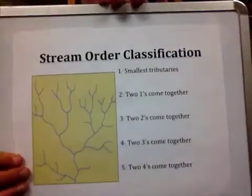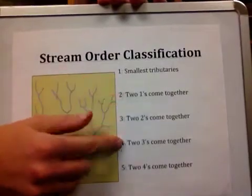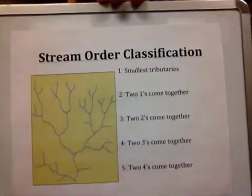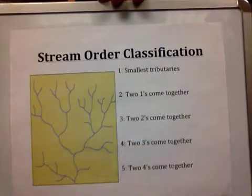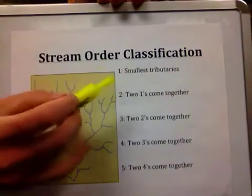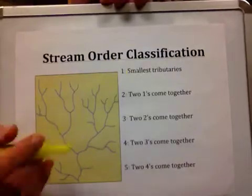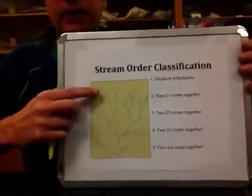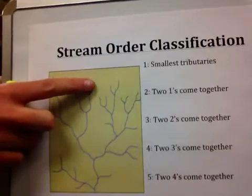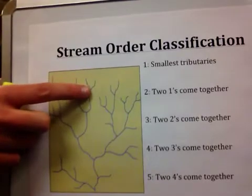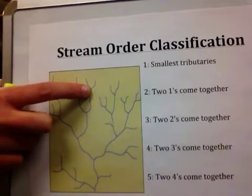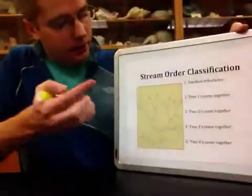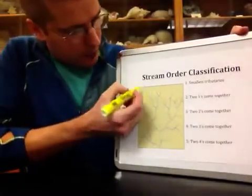We actually give numbers to streams — one, two, three, four, five — based on where they are in a drainage network. A number one stream is the smallest tributary. Everywhere that a very small stream flows until it meets another stream, we start by calling those our number one streams.